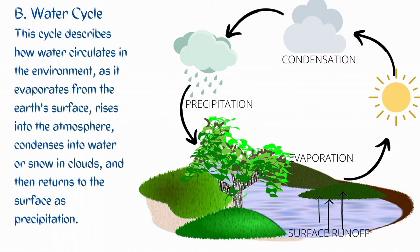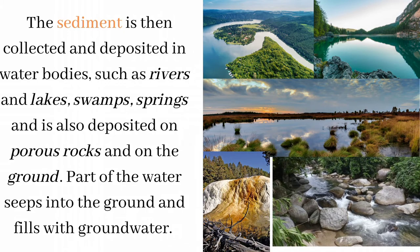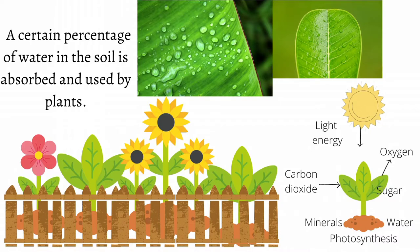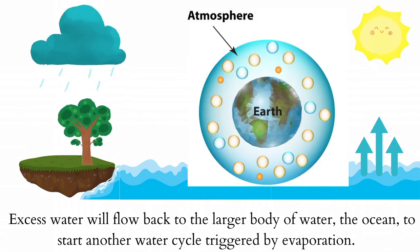Water cycle. This cycle describes how water circulates in the environment, as it evaporates from the Earth's surface, rises into the atmosphere, condenses into water or snow in clouds, and then returns to the surface as precipitation. The water is then collected and deposited in water bodies such as rivers and lakes, swamps, springs, and is also deposited on porous rocks and on the ground. Part of the water seeps into the ground and fills the groundwater. A certain percentage of water in the soil is absorbed and used by plants. The water will escape from the plant body through the pores of the leaves and return to the atmosphere as water vapor through transpiration. Excess water will flow back to the larger body of water, the ocean, to start another water cycle triggered by evaporation.